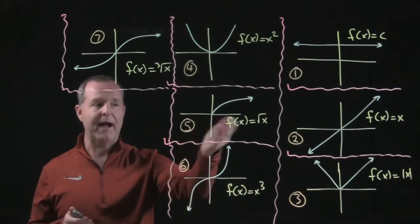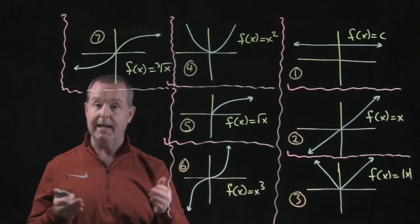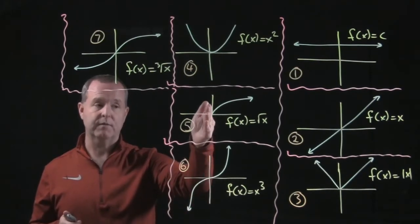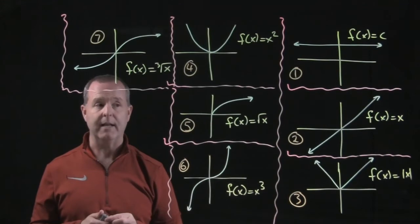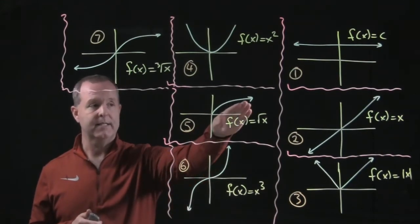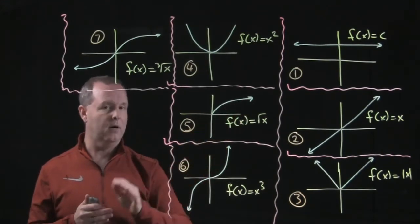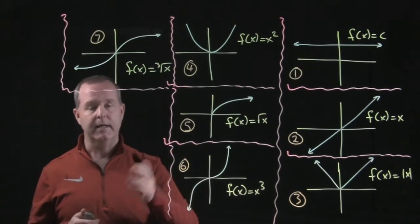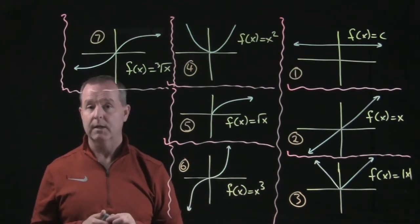For example, number five on the cube root function. Its domain looks like it starts at zero, so it's from zero to positive infinity. Its range, since this arrow is continuing going up, although very slowly, its range is also from zero to infinity.